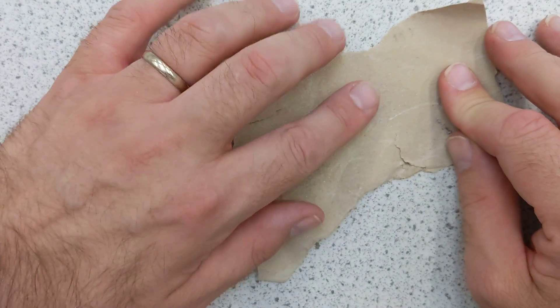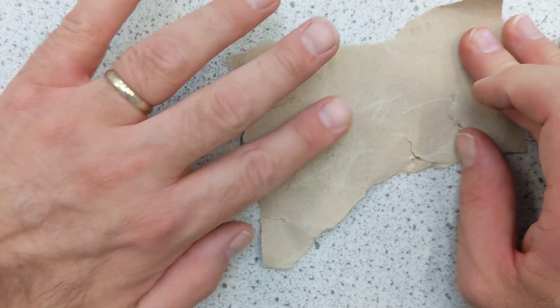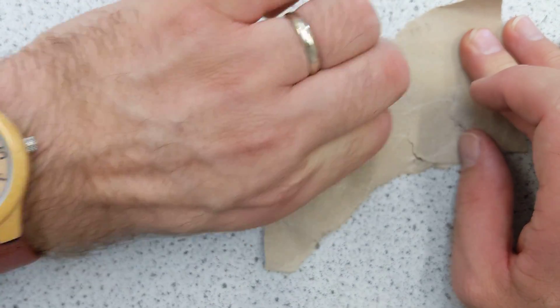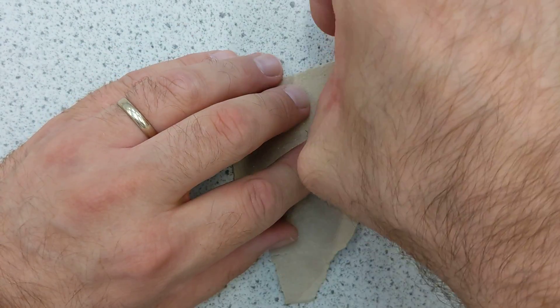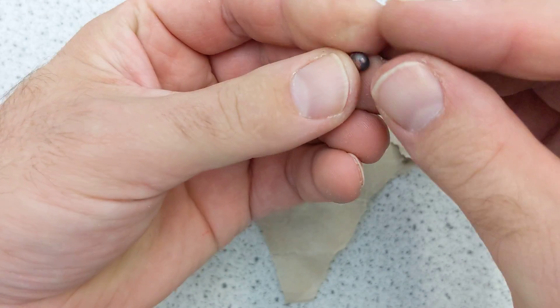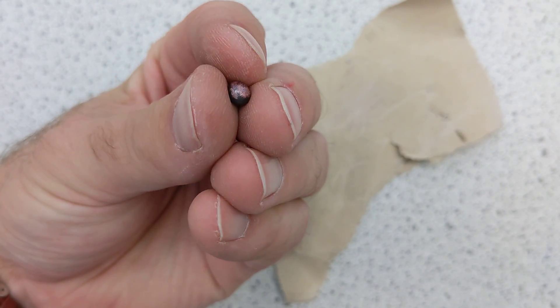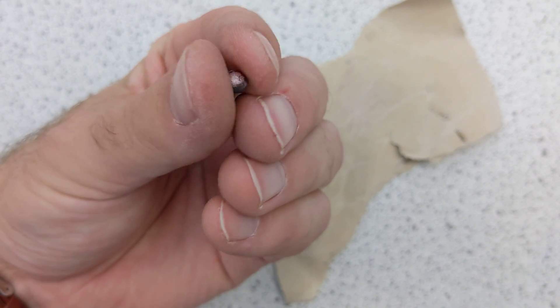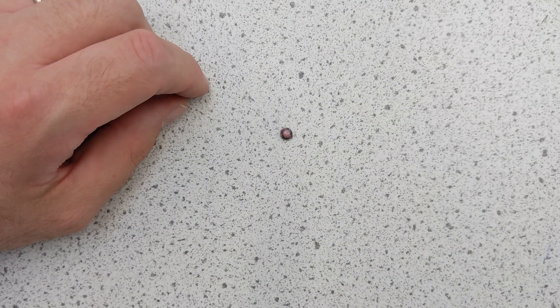So as long as you get the Bunsen burners in the right position, you can get them hot enough to melt copper. But what else will melt? That's the question. I'm going to try some other stuff now. I suppose that could be recycled now, but not much use for that tiny little ball of copper. Maybe I'll give it away as a prize or something. Don't swallow it.